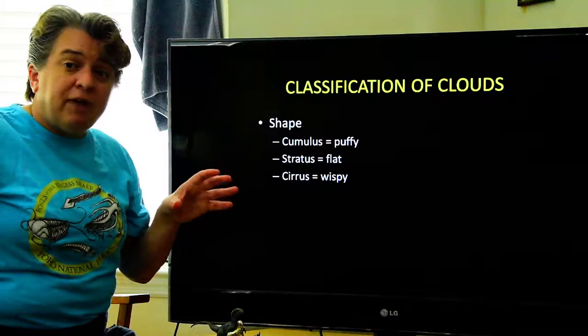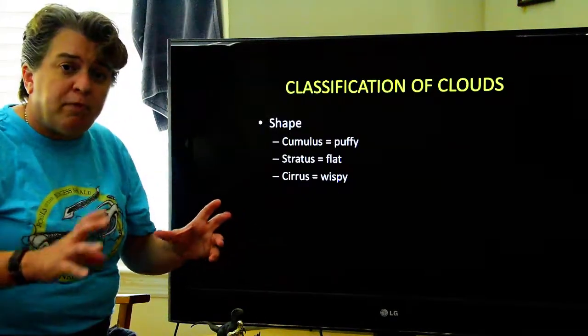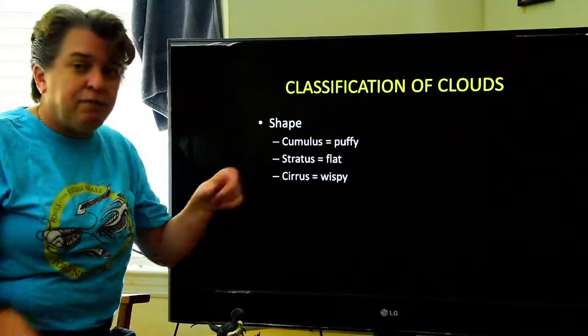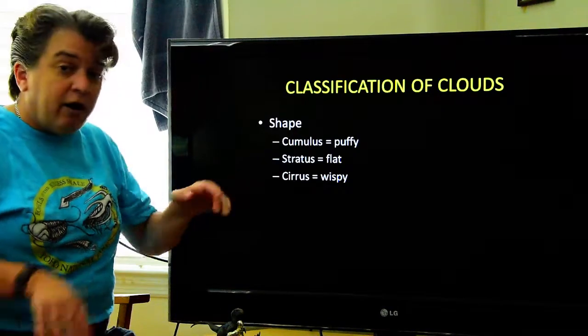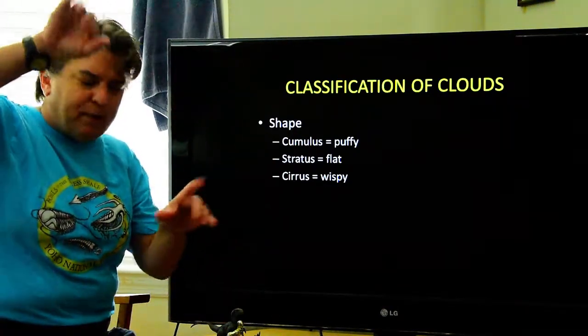But classification of clouds. First thing we look at is the shape of those clouds. We call them cumulus clouds if they're puffy, stratus clouds if they're flat, or cirrus clouds if they're kind of wispy.